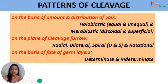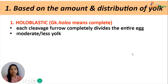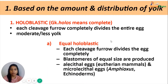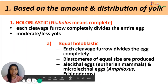The first category is holoblastic cleavage, in which each cleavage furrow completely divides the entire egg. The name derives from 'holos' meaning complete. This occurs in eggs with moderate or less yolk. In equal holoblastic cleavage, each furrow divides the egg so that blastomeres produced are of equal size. Equal holoblastic cleavage is seen in alecithal eggs of eutherian mammals and in microlecithal eggs such as amphioxus and echinoderms.